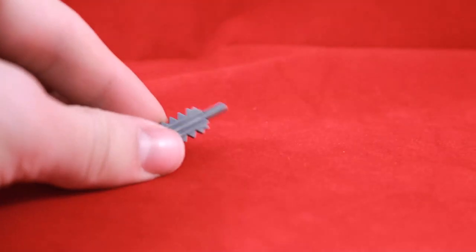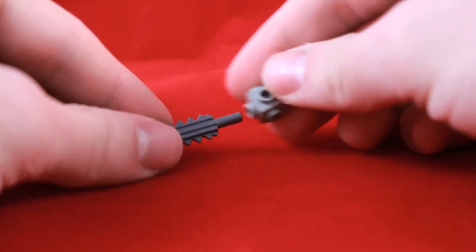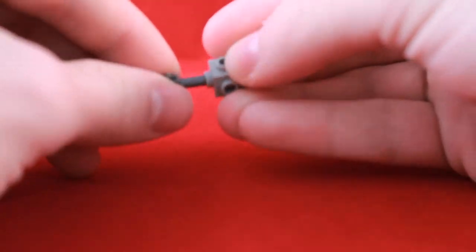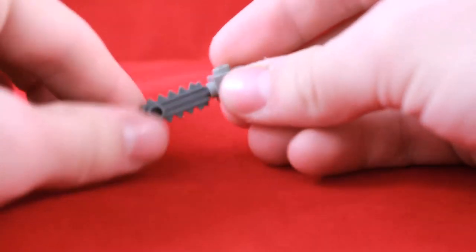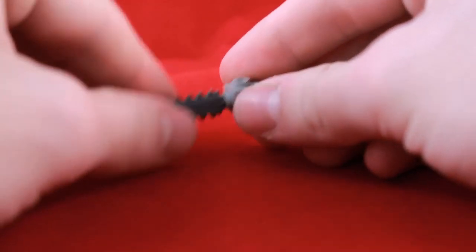So first of all, you can take your little chainsaw and take the 1x1 studs, and you're just going to connect them together like this. Make sure it's relatively straight.